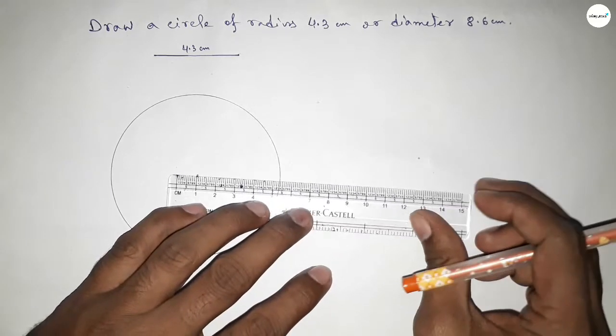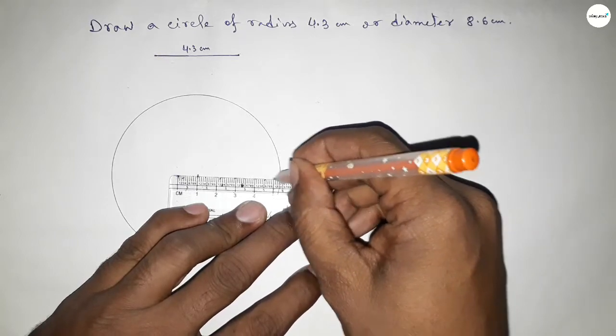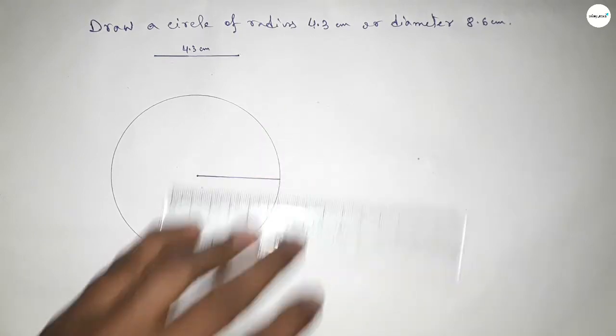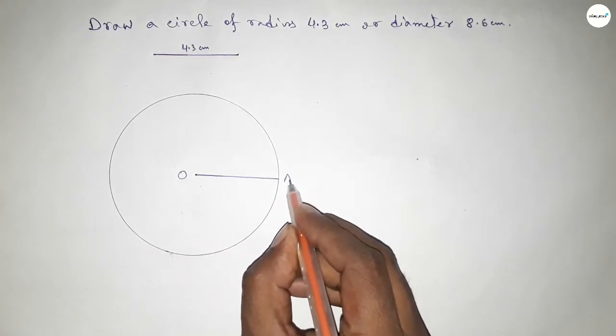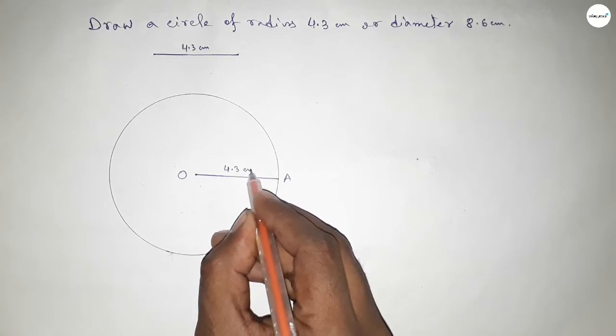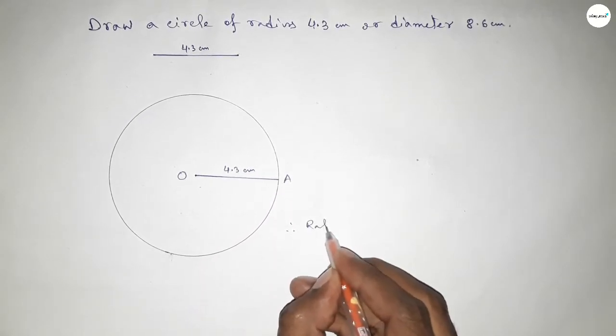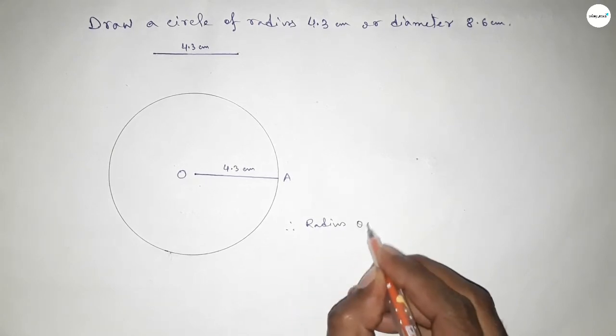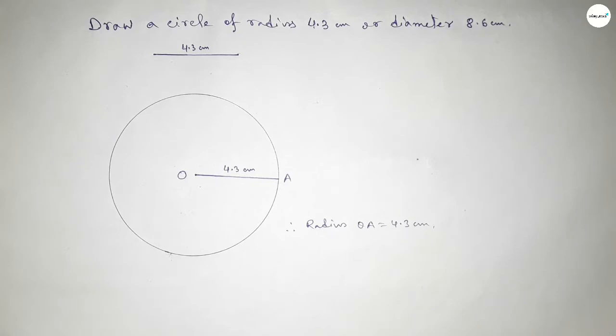Now joining this, which is the radius of the circle. Okay, so this is center O and here a point, and this is 4.3 centimeters. Therefore, radius of this circle OA is equal to 4.3 centimeters. That's all.